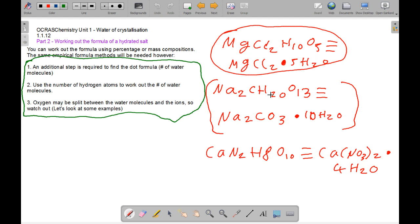Now with Na2CH20O13, you realize that Na2CO3 is also a carbonate, but there's also ten water molecules attached to it as well. And for CaN2H8010, this is a very long one, calcium nitrate twice. Well, the nitrate bit is twice, to make 4 H2O plus 4 H2O for this one.